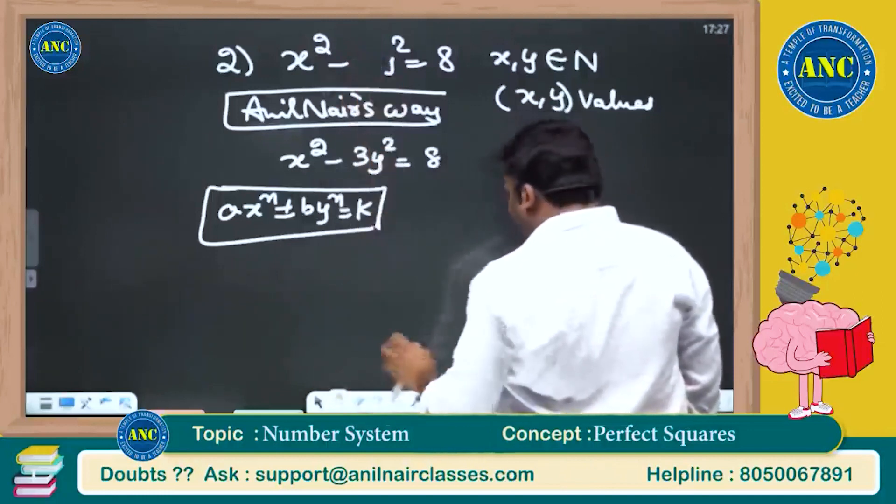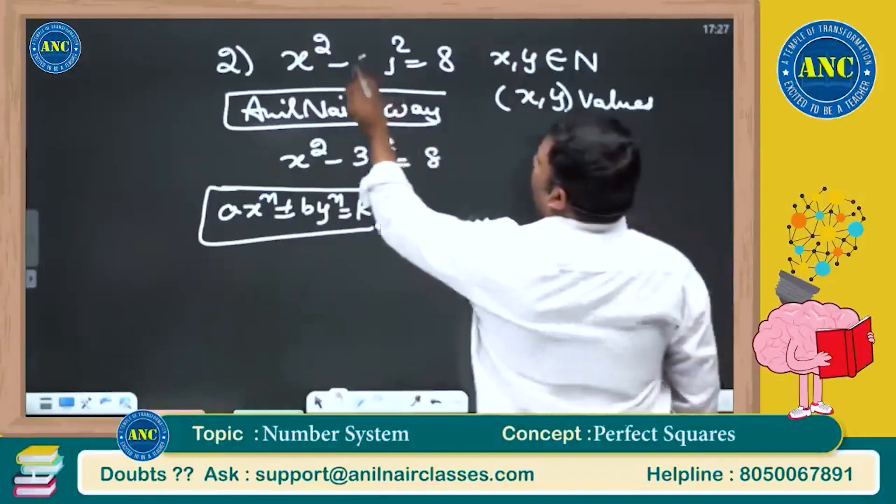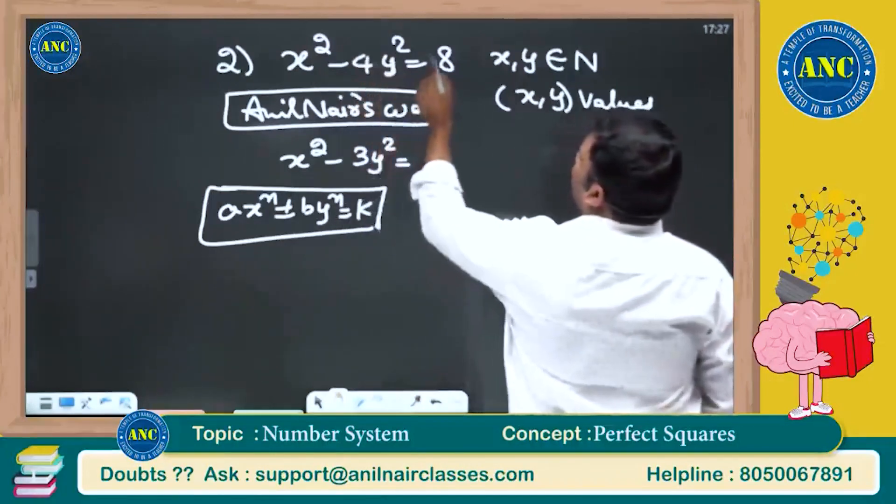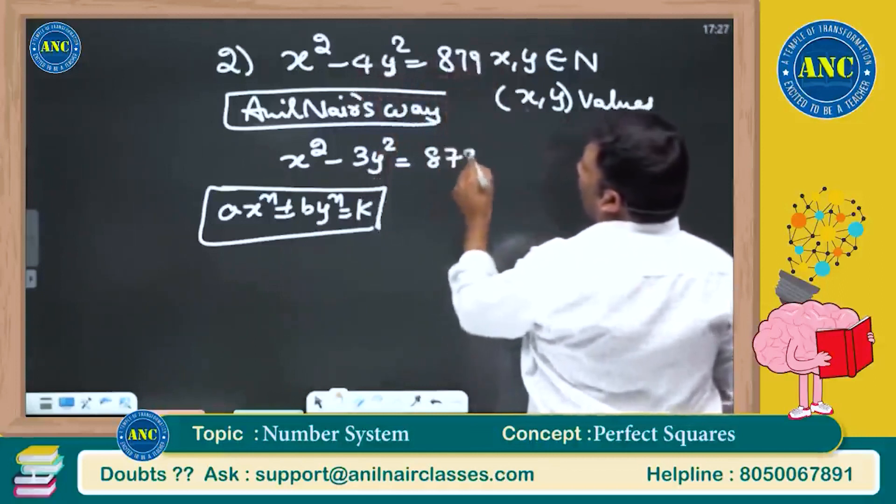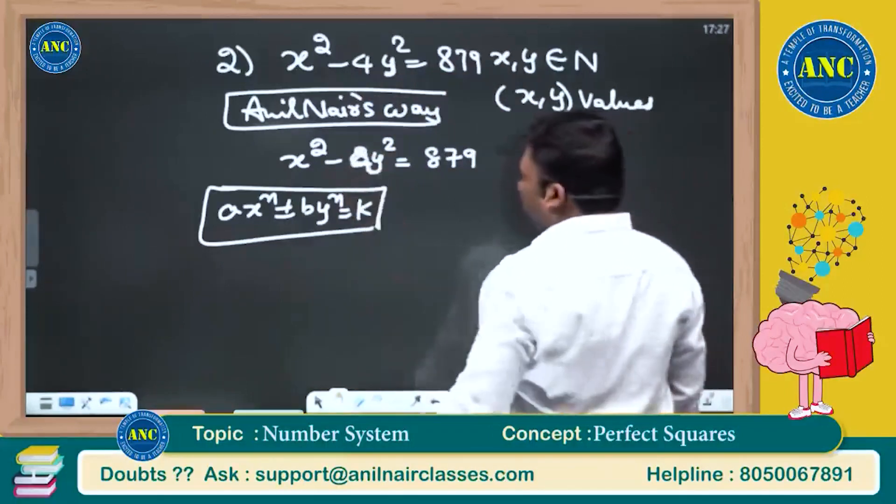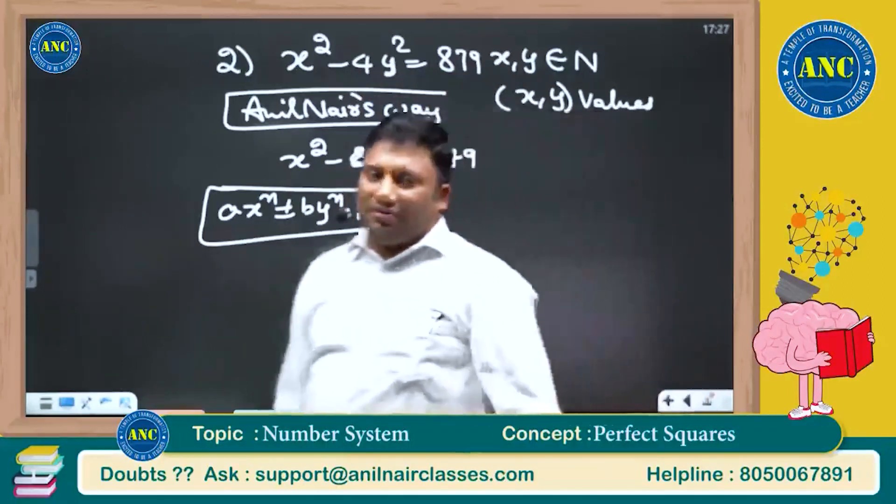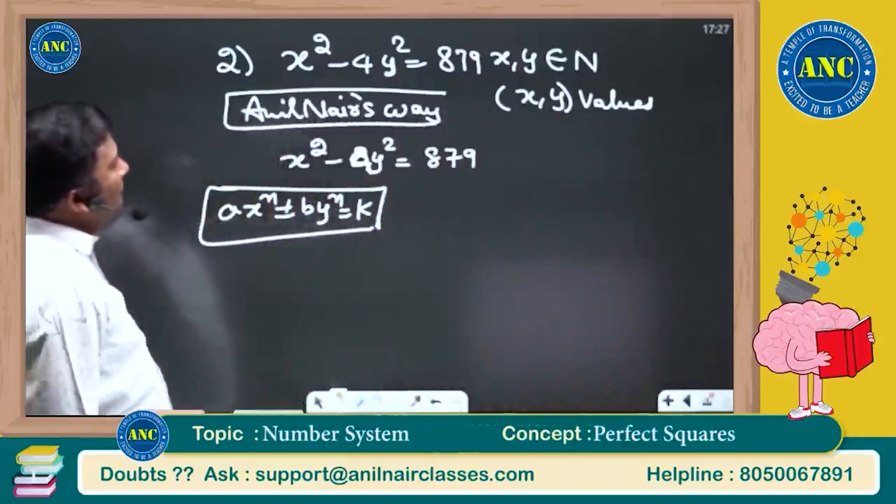Replace these 3, write it down as 4, then we will do it with 3. x square minus 4y square equivalent to 879. Then I will do the same question by telling you the counter of the problem. x square minus 4y square equivalent to 879.